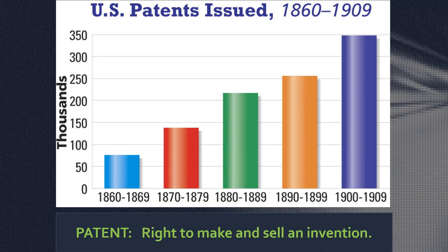Let's talk about one of the ways the U.S. government helped support big business: patents. A patent is a legal right to make and sell your invention because you register it with the government as yours, and nobody else can steal or copy it. Patents enable people to create new technologies, make money off them, and those technologies change America. After the Civil War, we get things like barbed wire, the passenger elevator, the refrigerated railroad car, light bulbs, and telephones — all patented innovations that made money for their inventors.